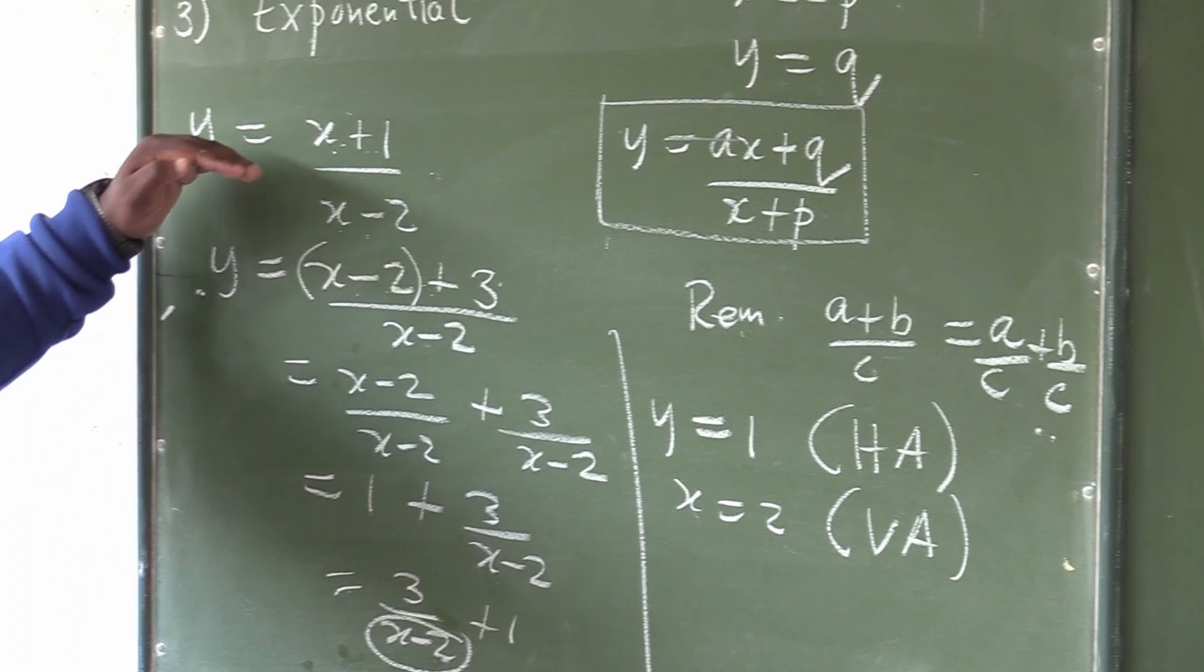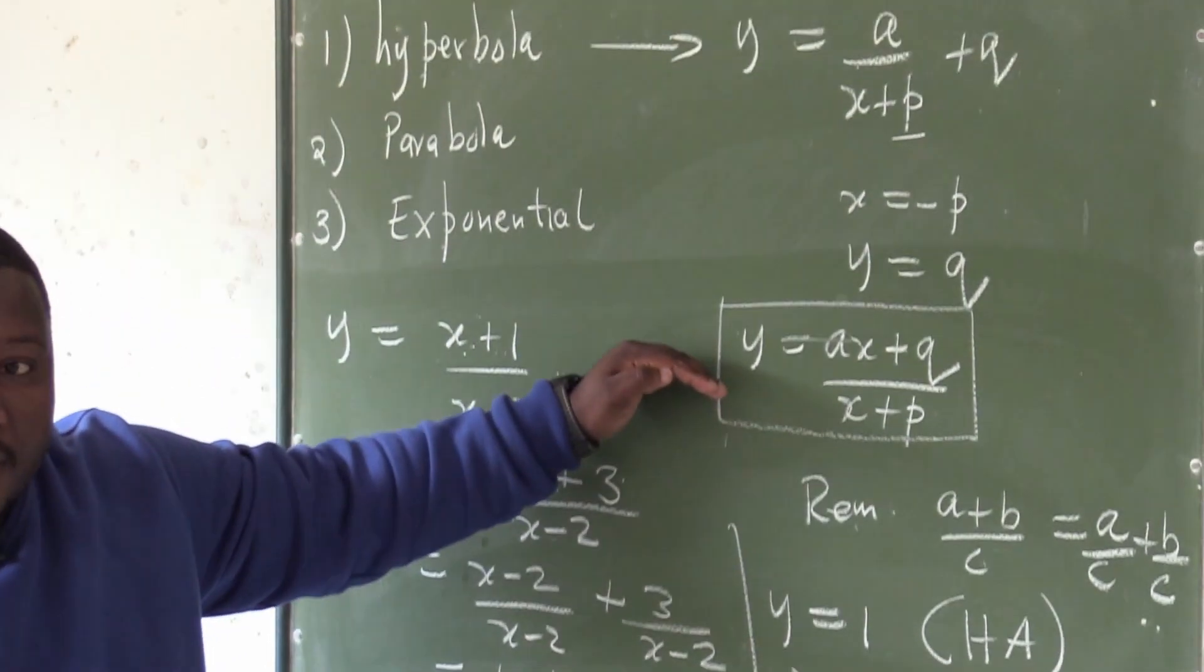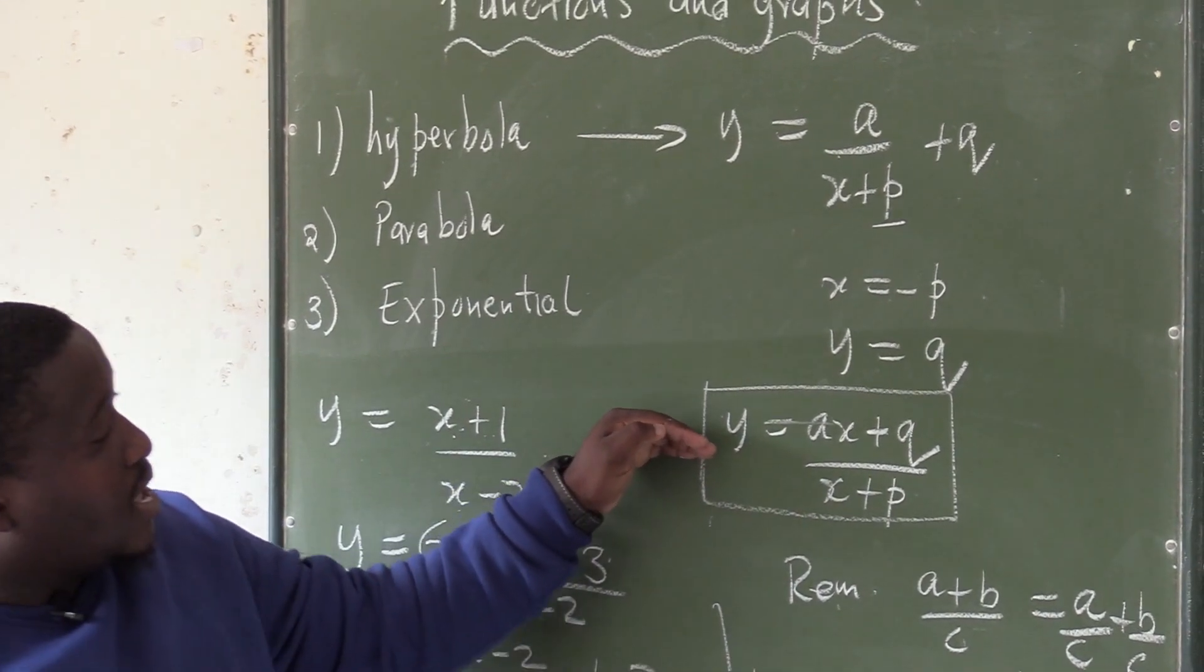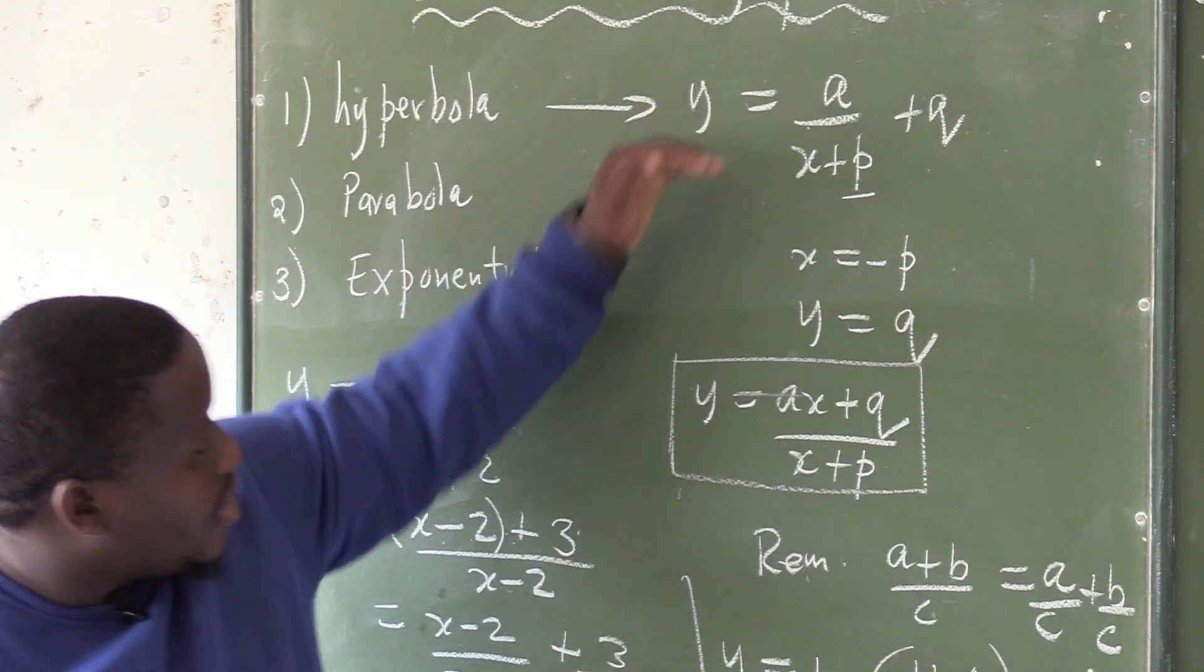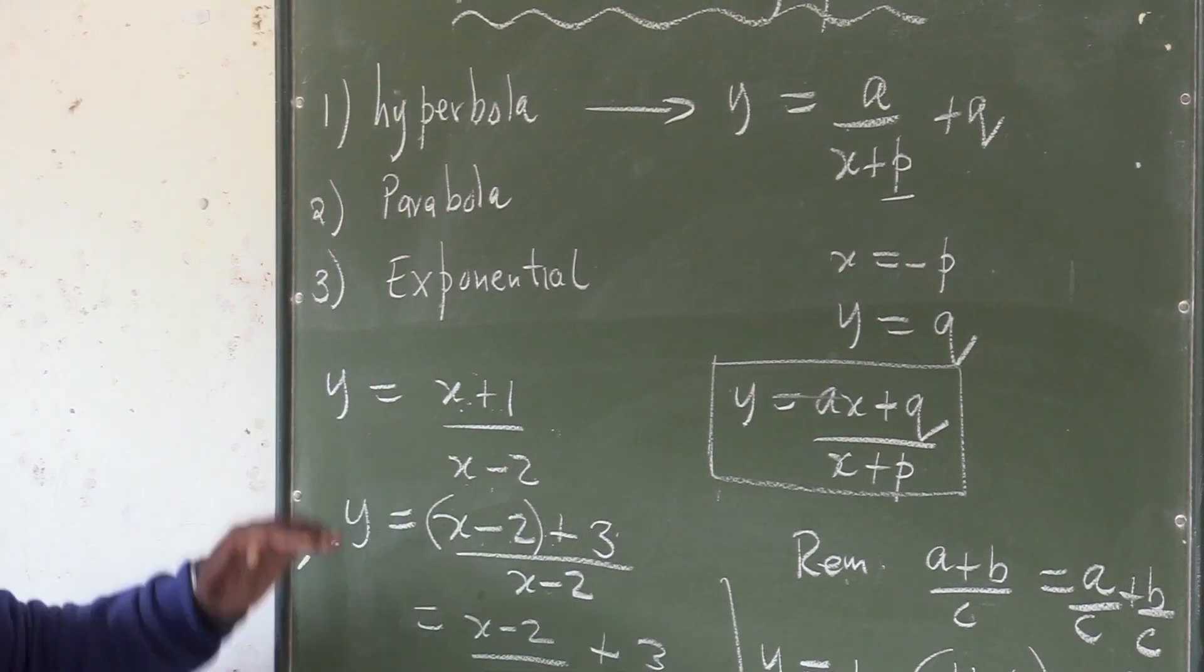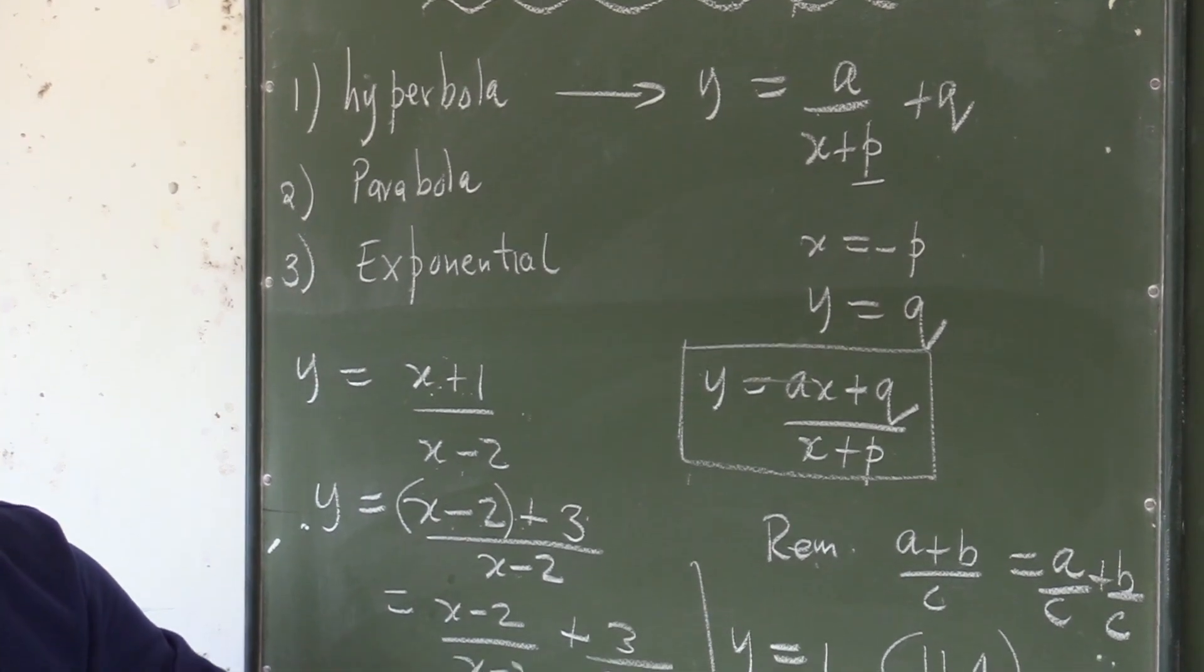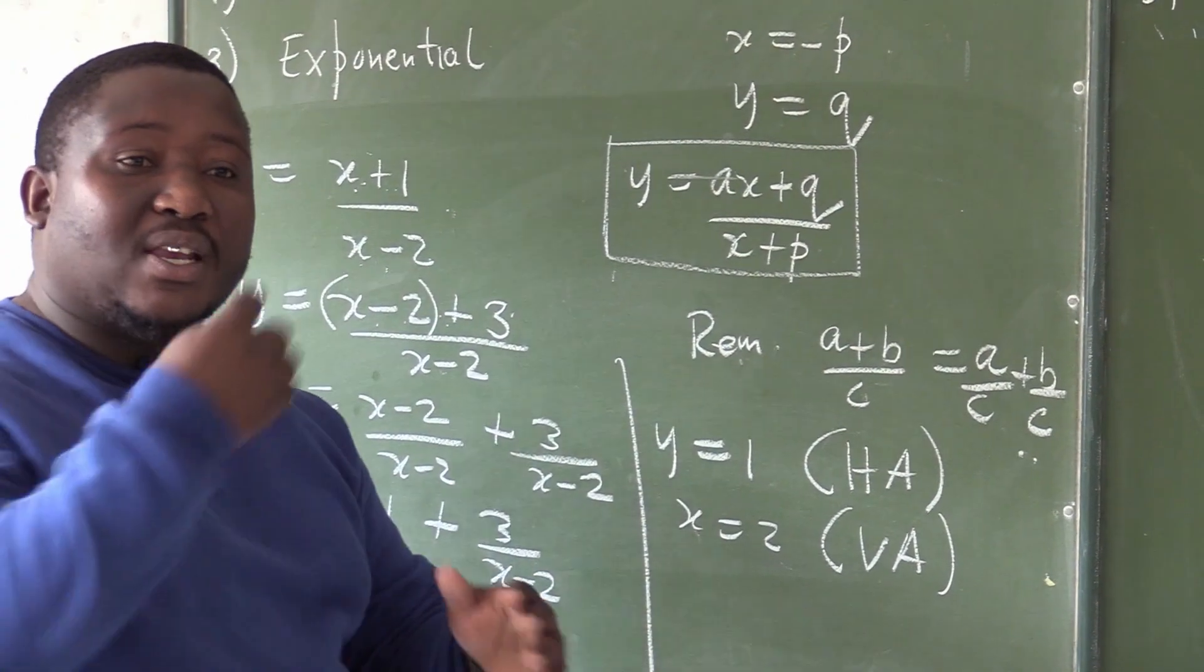One thing that we have covered so far is that you can either be given in that form or in that form, but if you are given in this form, it is easy to see the asymptote once it is back to that form. Therefore, you must convert, and this is our example there. Once simplified, it will show us what is one of our asymptotes - this is my asymptote, this is my vertical asymptote, and this is my horizontal asymptote.